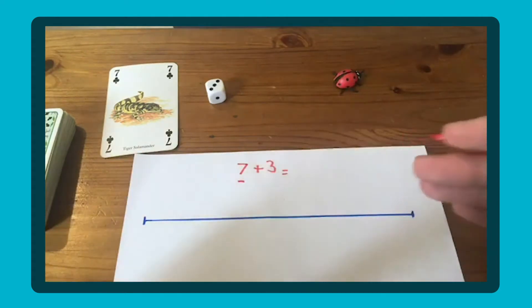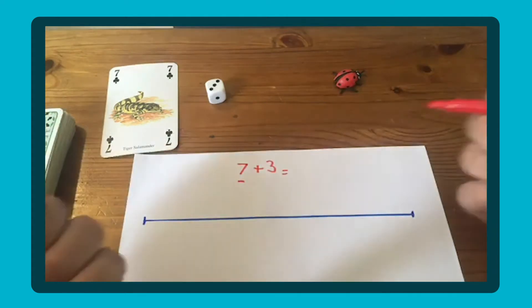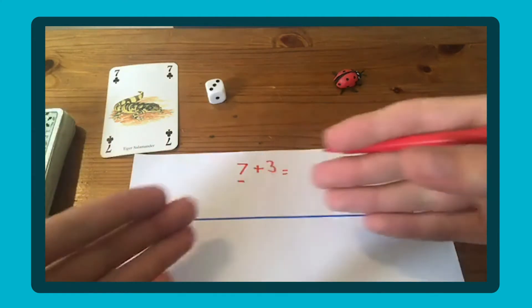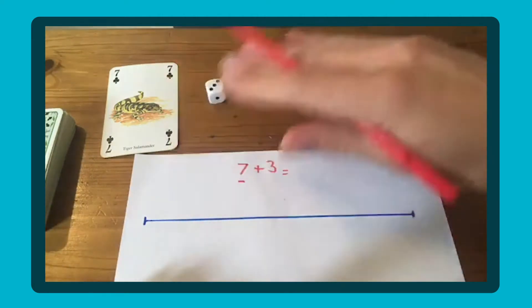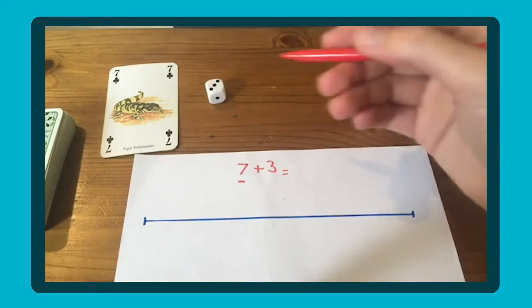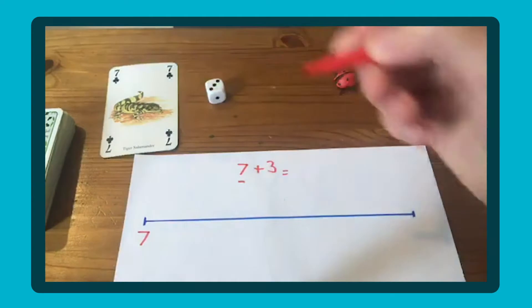Seven add three, making sure the biggest number comes first when counting on. You could use a number line as a scaffold that can be taken away as your child gains confidence. It works best if it's laminated or on a mini whiteboard so you can wipe it clean and reuse it. I'm going to put seven at the left-hand side.